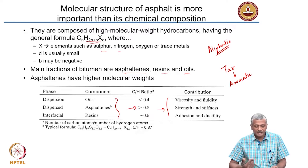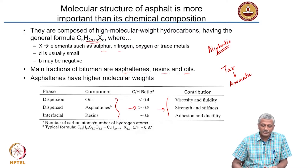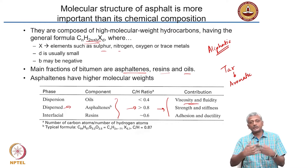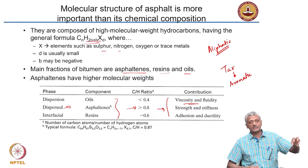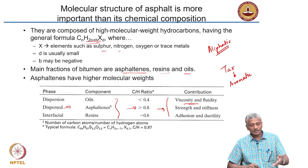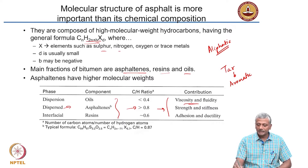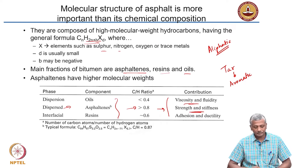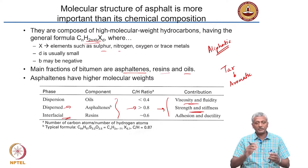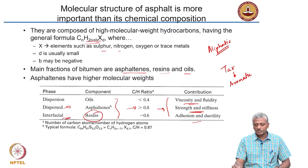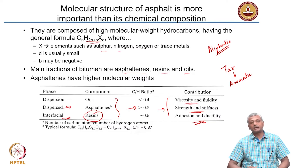The dispersing phase — the oils — is the dispersion phase responsible for fluidity and viscosity. The dispersed phase is your asphaltenes, which are responsible for the strength and stiffness of the asphalt. The interfacial phase between the asphaltenes and the oil consists of the resins, which are responsible for the adhesion and ductility of the asphalt.